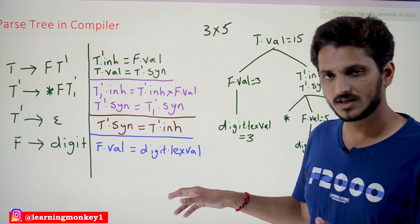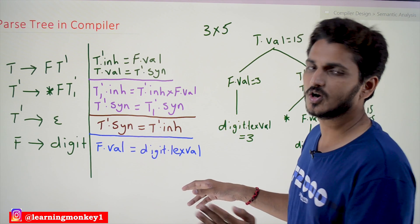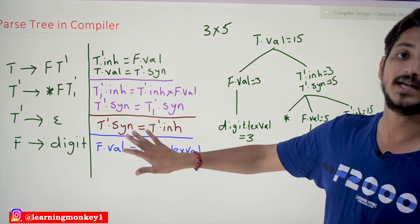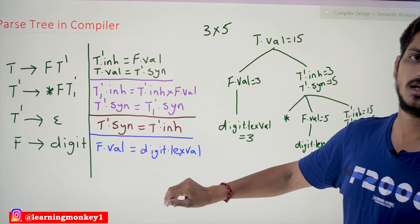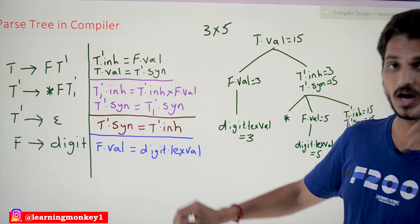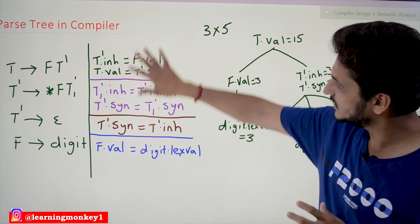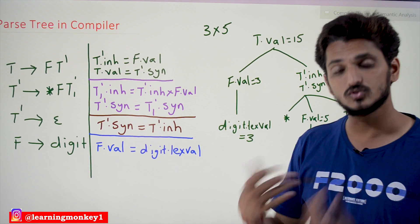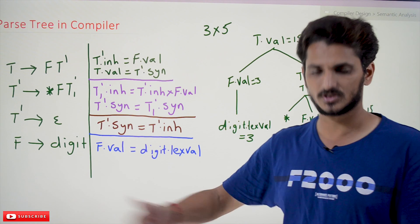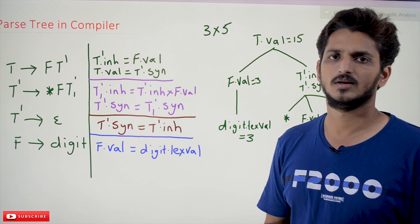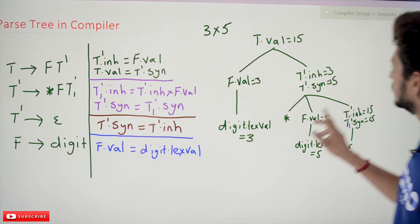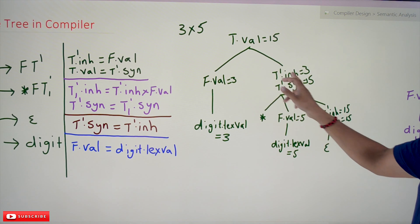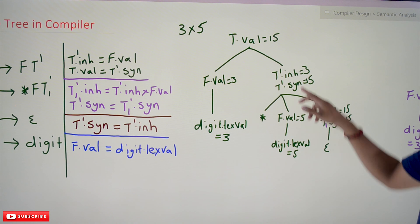The dependency graph shows the evaluation order of the attributes defined in our semantic conditions. We have to be very careful when writing these attributes. The situations where evaluation can get stuck will be discussed in our next class.